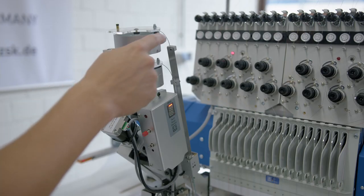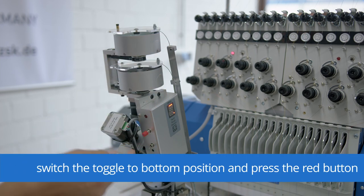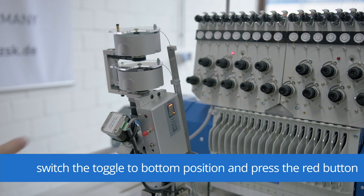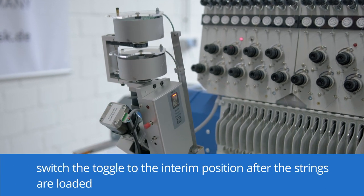In order to fill up the bead loading strings, we need to switch the toggle to the bottom position and push the red button. The bead loading drums will start feeding the beads to the string. If the string is fully loaded, switch the toggle to the interim position.